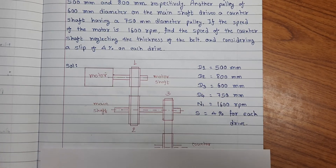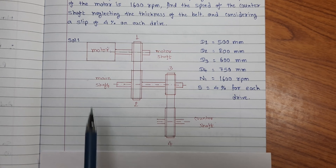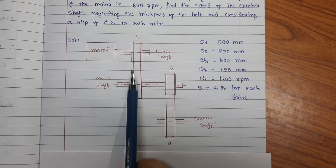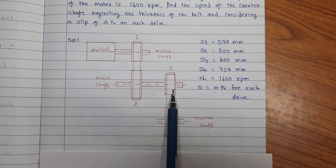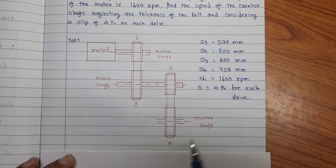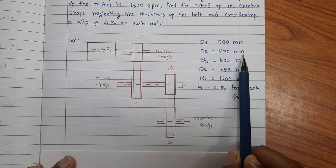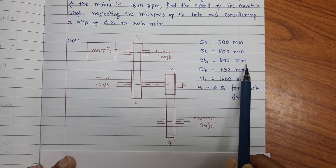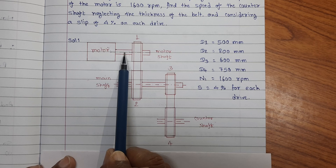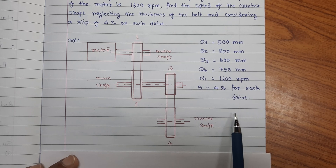Let us first of all prepare the diagram for the given situation. A motor having a motor shaft and pulley 1 runs the main shaft by flat drive with pulley 2. Another pulley 3 is mounted on the main shaft and runs a counter shaft by flat belt through pulley 4. The diameters are: D1 is 500 mm, D2 is 800 mm, D3 is 600 mm, and D4 is 750 mm. The motor shaft and pulley 1 rotates at speed N1 equal to 1600 rpm.